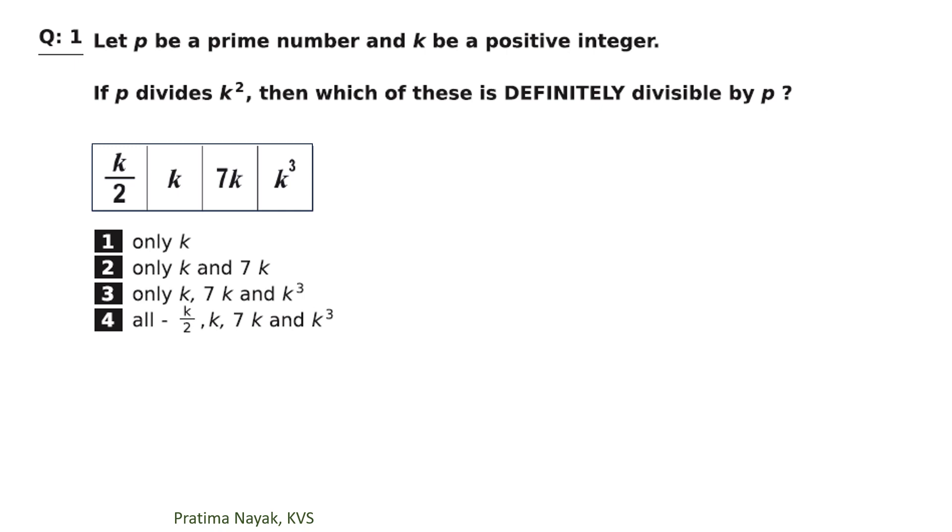Read the question very mindfully. Let P be a prime number. K is a positive integer. If P divides K square, then which of these is definitely divisible by P? Options are K by 2, K, 7 times of K, K cube.